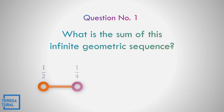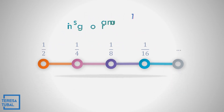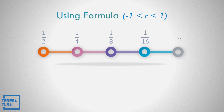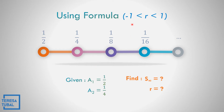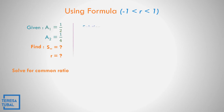Question number 1. What is the sum of this infinite geometric sequence: 1 half, 1 fourth, 1 over 8, 1 over 16, and three dots indicating it is infinite? Let us get the common ratio to identify if r is greater than negative 1 but less than 1. If that is the case, let us see if this geometric sequence has a sum that does exist. So, let us solve the common ratio.